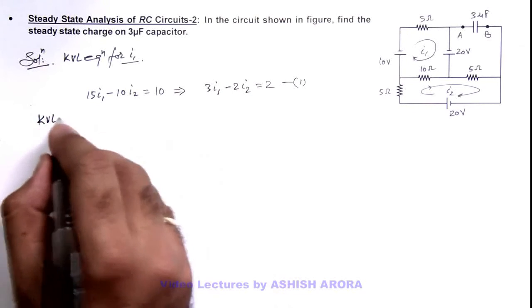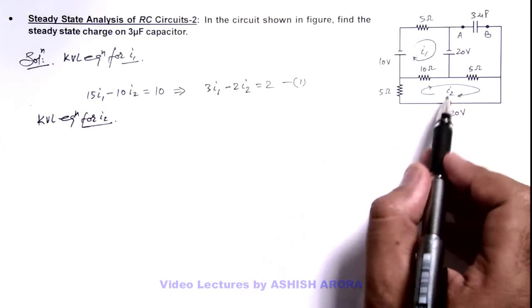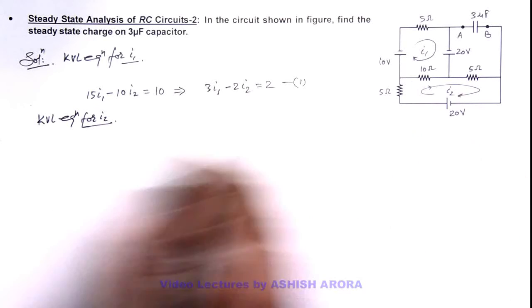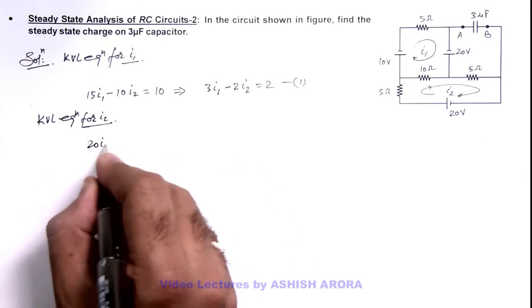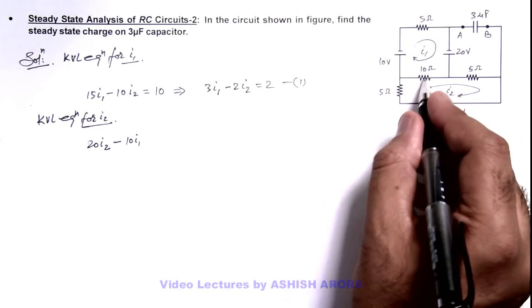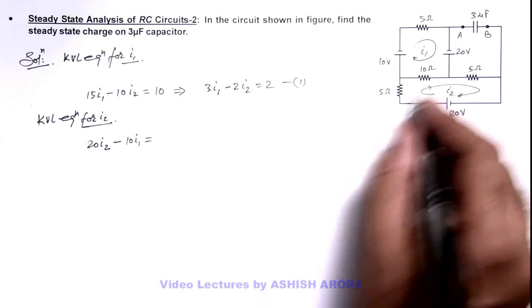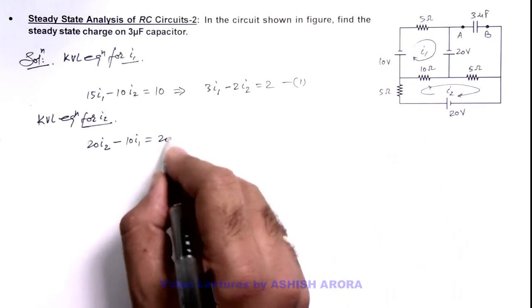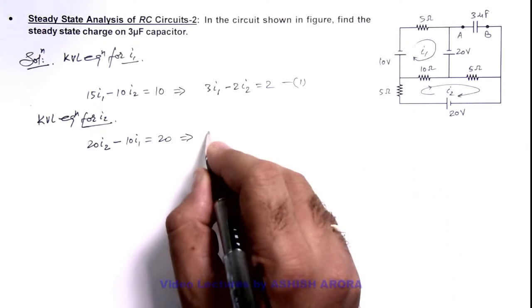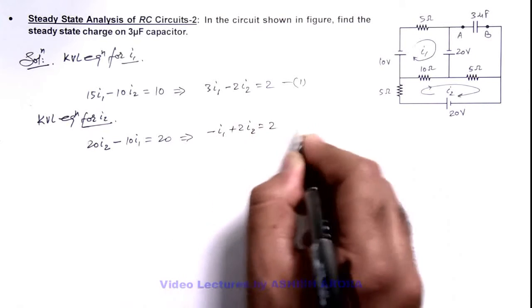Now writing the KVL equation for current I2: the total resistance in this loop is 20 ohm. So we write 20I2 minus 10I1, because in this 10 ohm resistance, I1 is flowing in the opposite direction. This equals the total loop EMF of 20. Simplifying gives equation 2: -I1 + 2I2 = 2.